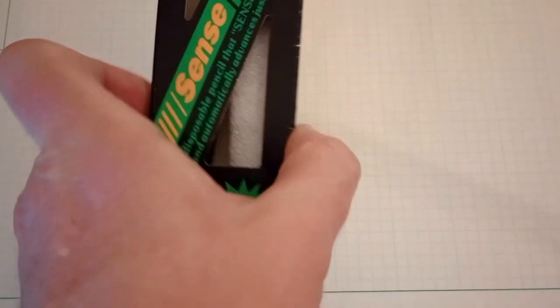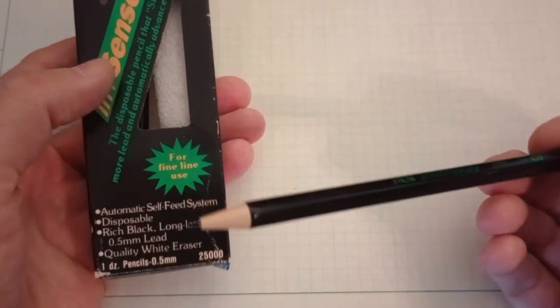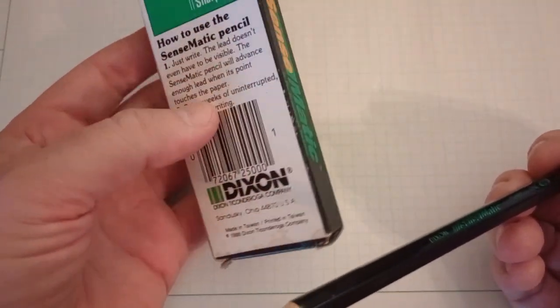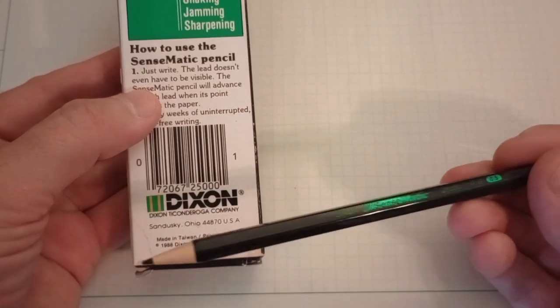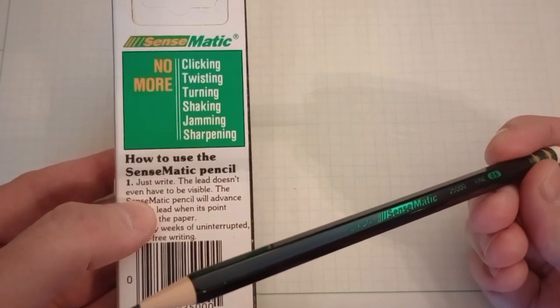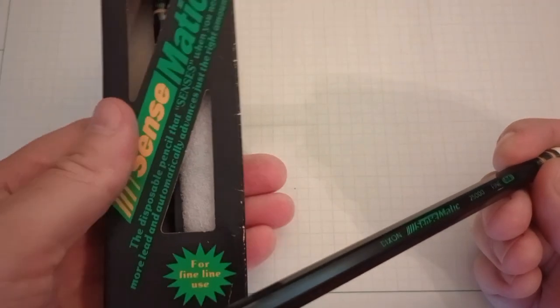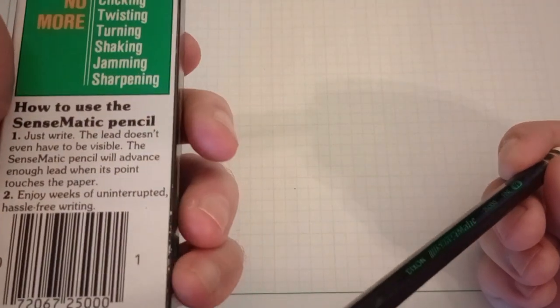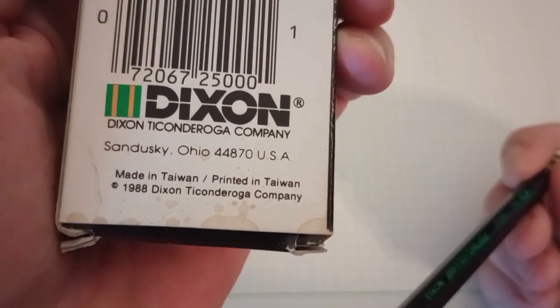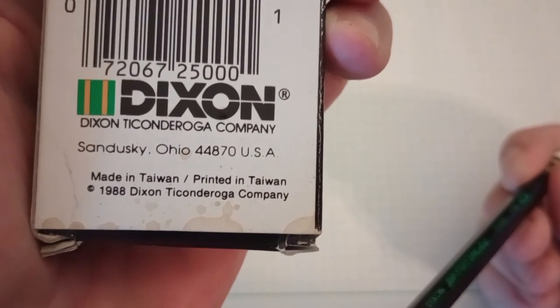We have here the original iteration of the Dixon Sensomatic. By original I mean when it first came out, it was also available in yellow, traditional Ticonderoga yellow, which I suppose would be the original. Based on the copyright date information here, 1988 Dixon Ticonderoga. This was coming out.